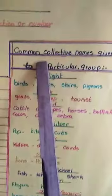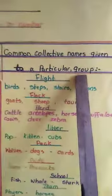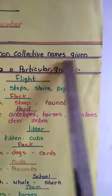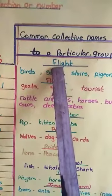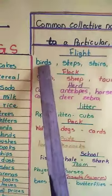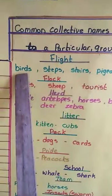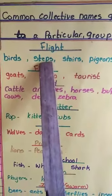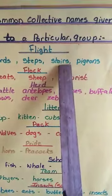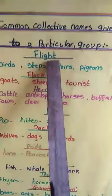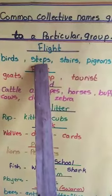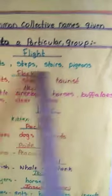Since we have learned examples of collective nouns for people, animals, and things, we will now go on to common collective names given to a particular group — meaning a certain collective noun can be used to define many other common nouns. For example, flight: flight can be used for birds, steps — the stairs on a ladder or going up to your house — and pigeons. So we can say flight of birds, flight of steps, flight of stairs, and flight of pigeons.